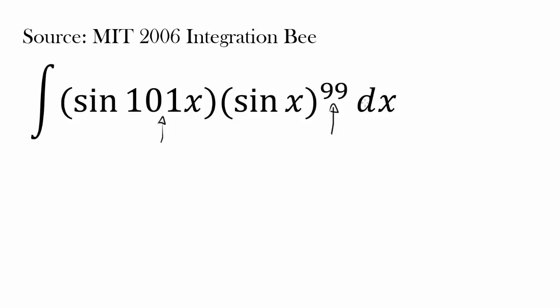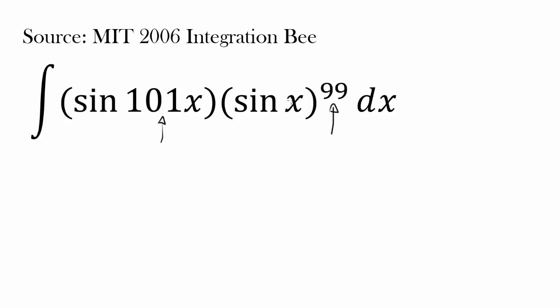101x raised to the power of 99 — why can't they give us something easier, like just integrating sine of x times sine of x? But we have sine of 101x times sine of x raised to the 99th power. Let me stop emphasizing the seemingly difficult nature of this question and actually get to work. How do we even start? We have 99 and 101 — is there a way to make them similar or make them even out somehow? Both are fairly large and it's not very obvious how we can start working with the 99th power and the coefficient of 101.